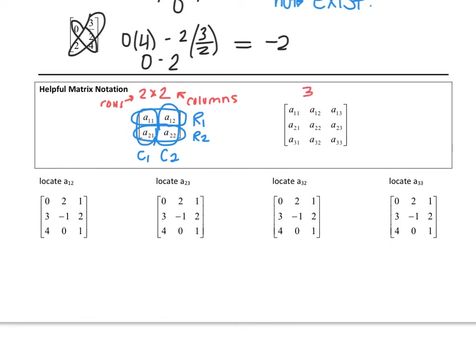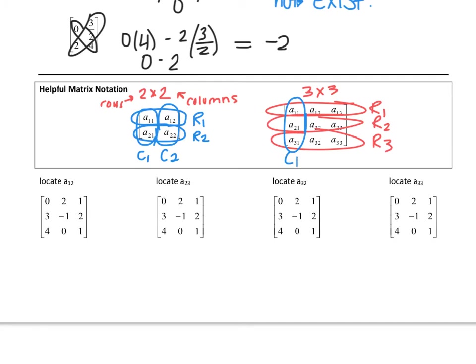The same notation exists for a 3 by 3 matrix. These are row 1, row 2, and row 3, and these are column 1, column 2, and column 3. So a position at second row, first column would be A sub 21. Now I'd like you to locate A sub 12 — that's first row, second column, which is right here. A sub 23 is second row, third column, which is this value. See if you can try locating A sub 32 and A sub 33, then hit resume to see your answers.